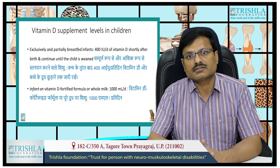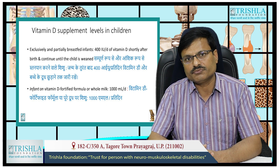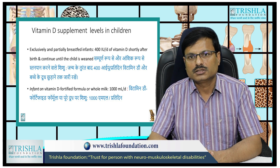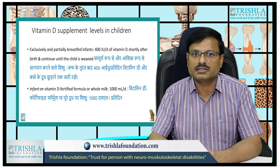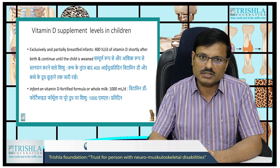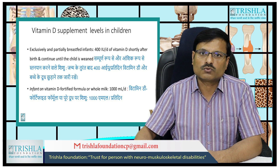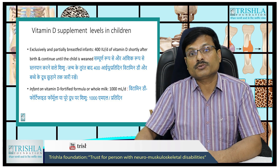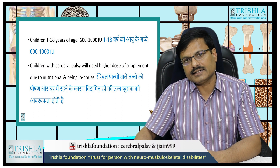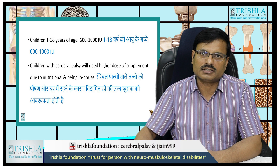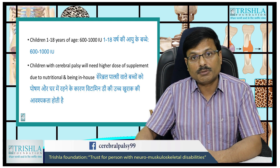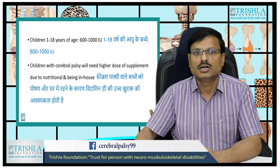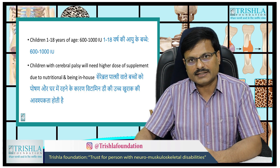For vitamin D supplementation in children: exclusively or partially breastfed infants require 400 international units per day shortly after birth, continuing until weaned. Infants on vitamin D-fortified formula require a minimum of 1000 ml of milk per day. Sunlight exposure is also very important. Children between 1 to 18 years require 600 to 1000 international units of vitamin D. In cerebral palsy children, because they are mostly indoors, higher doses of supplemental vitamin D — through nutrition or sunlight exposure — are required.